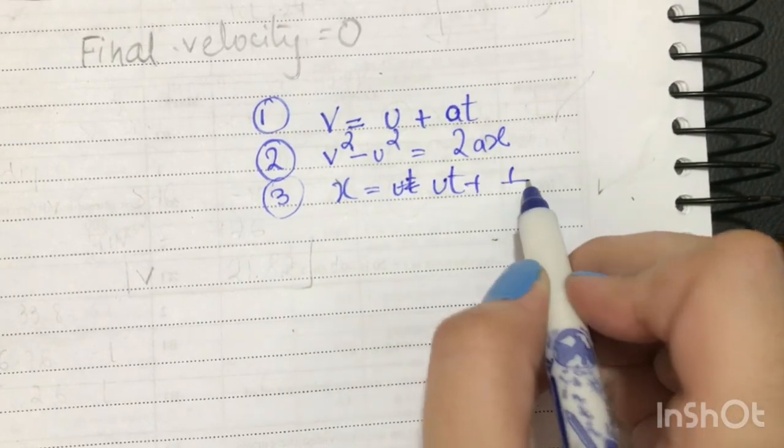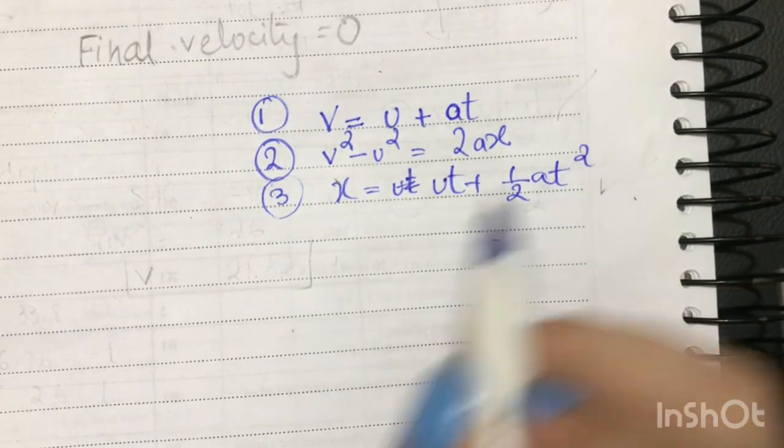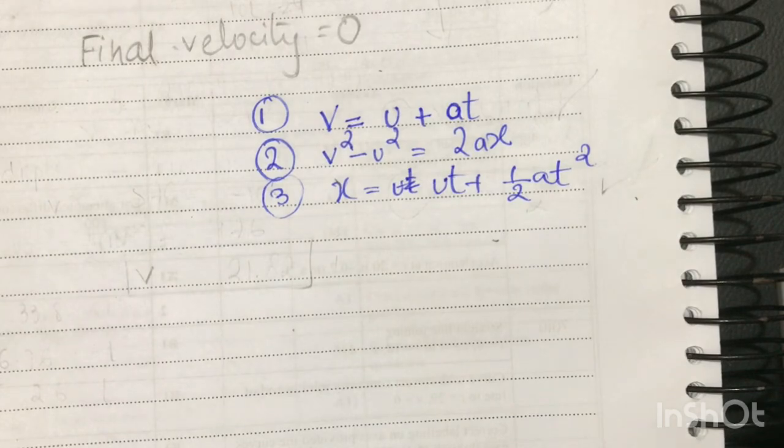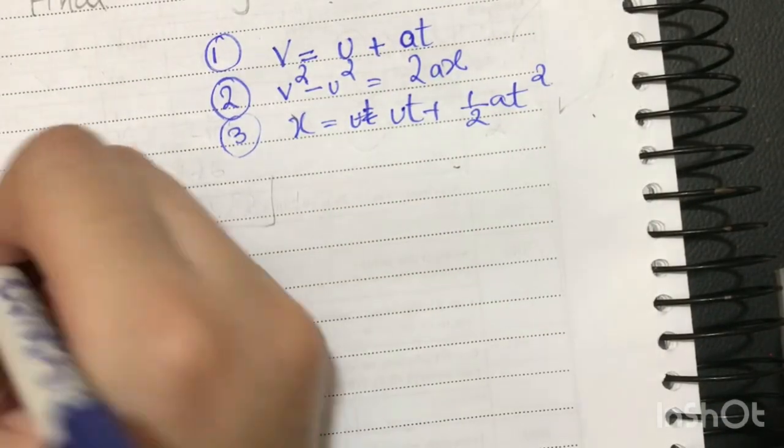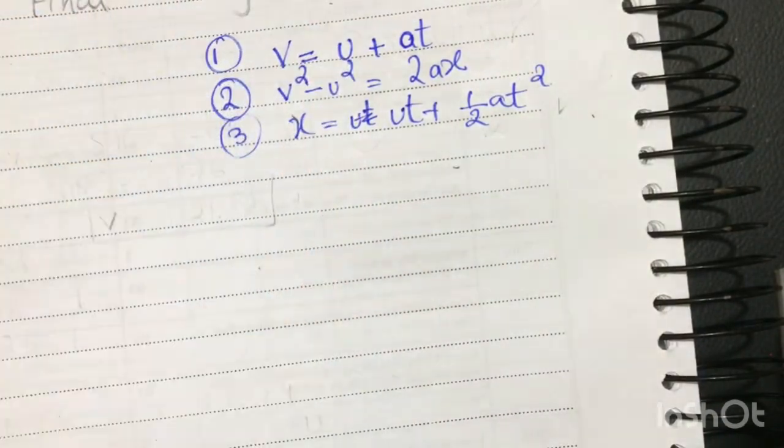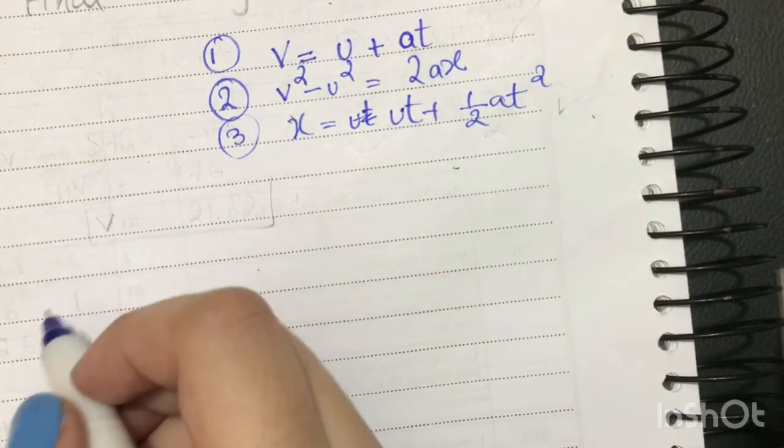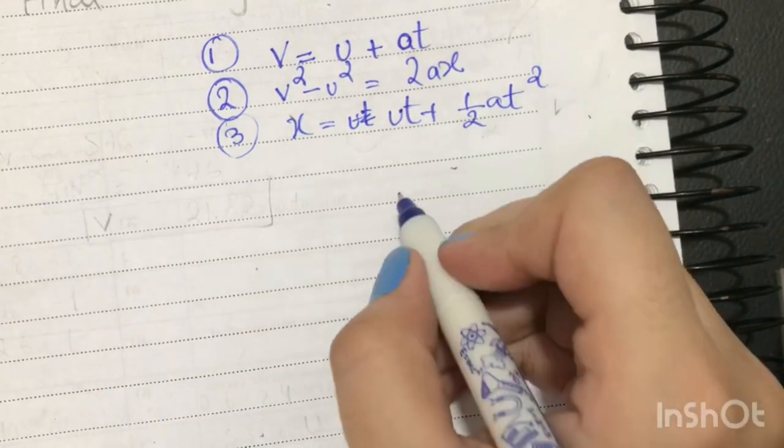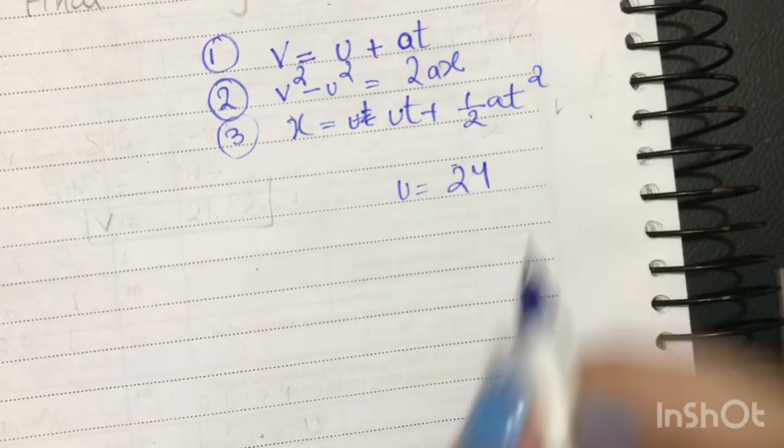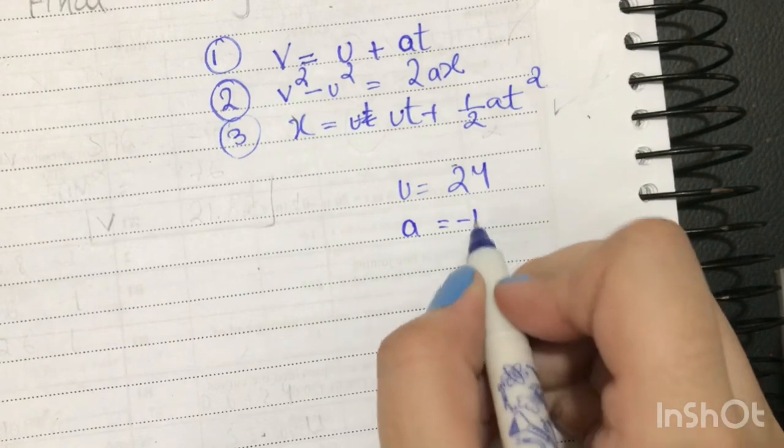Now the first step is finding the distance and the time. So we will use, since we have the initial velocity which is 24, you have acceleration which is minus 10.